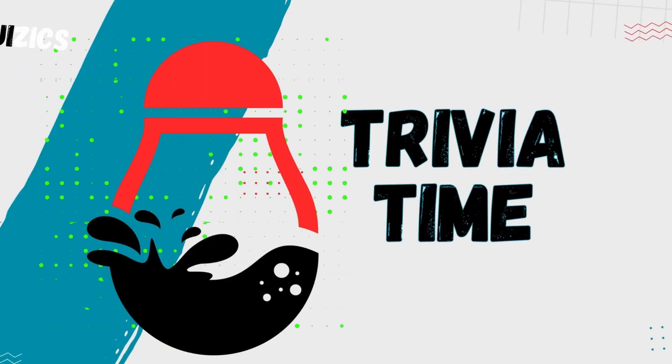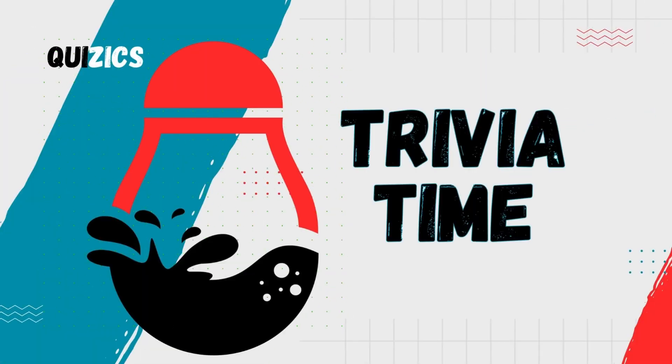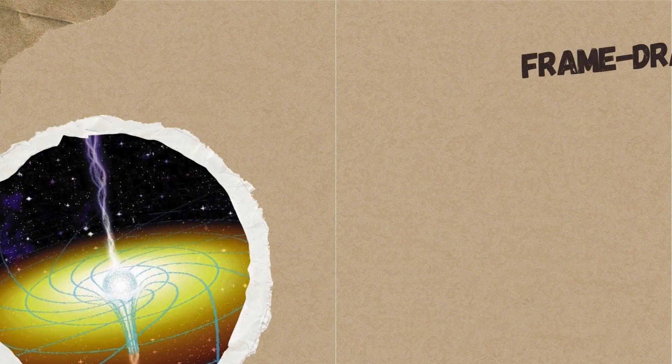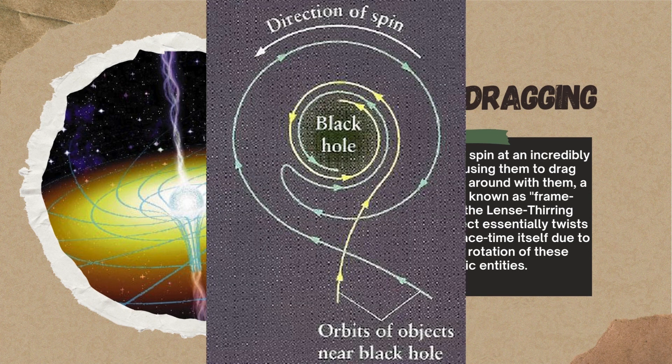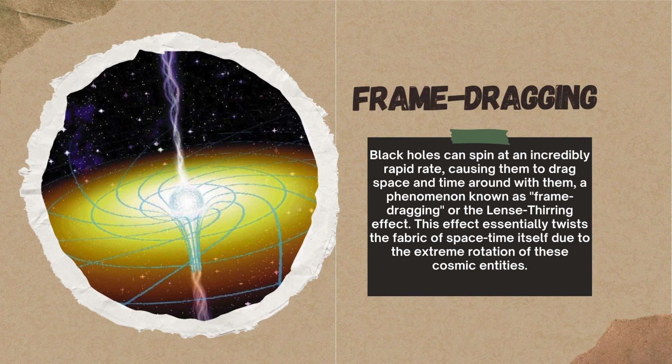Trivia time. Black holes can spin at an incredibly rapid rate, causing them to drag space and time around with them — a phenomenon known as frame dragging, or the Lense-Thirring effect.